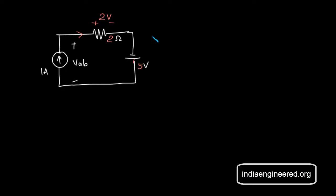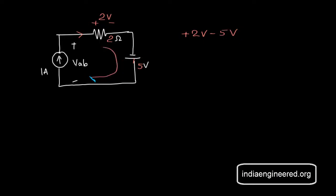Now we apply KVL in this loop, going in this direction: plus 2 minus 5 volts minus VAB equals 0. That gives VAB equal to 2 minus 5, which is minus 3 volts.